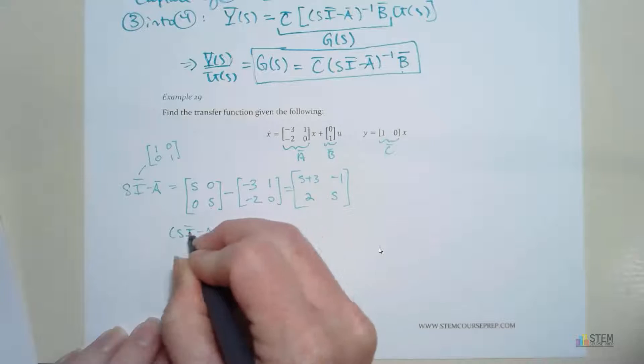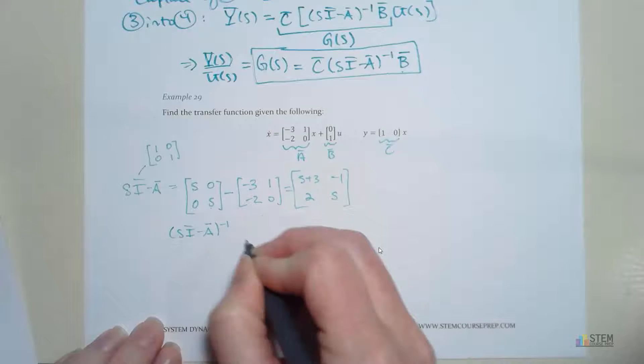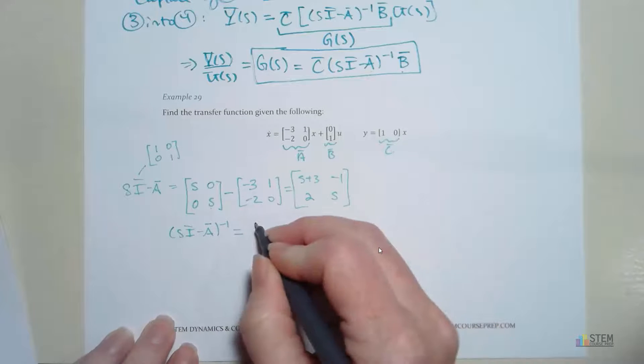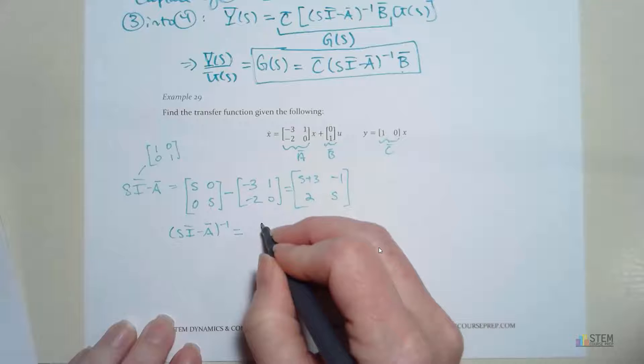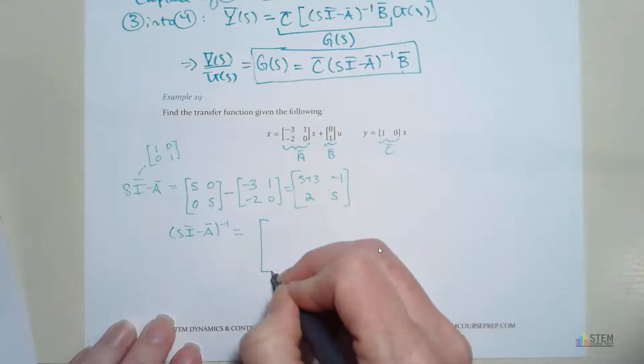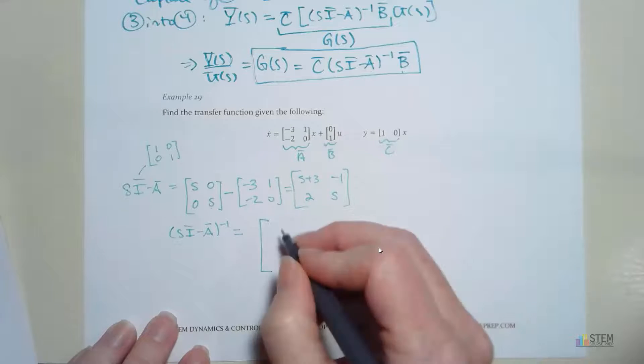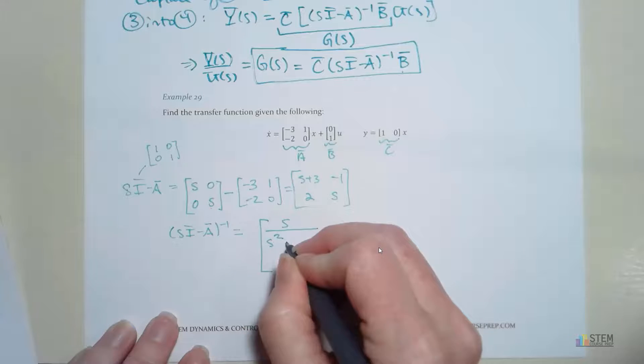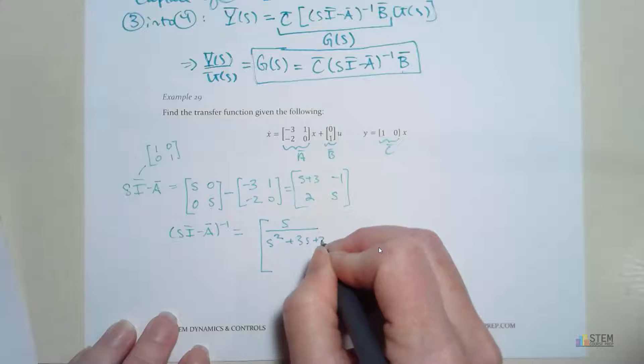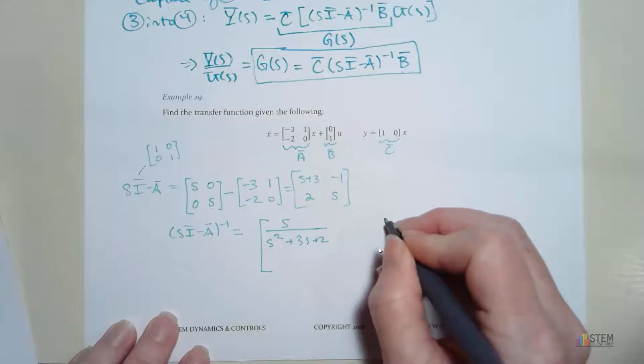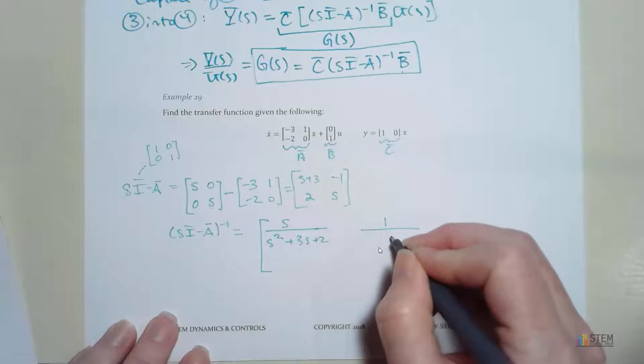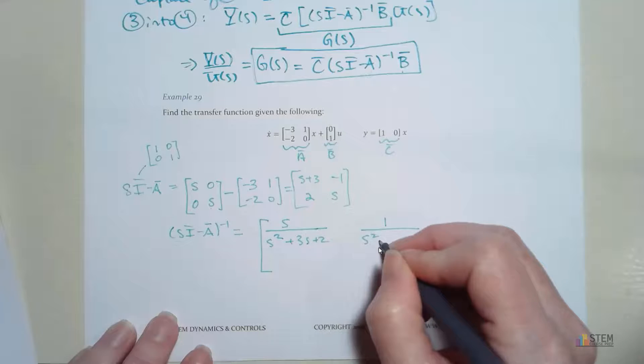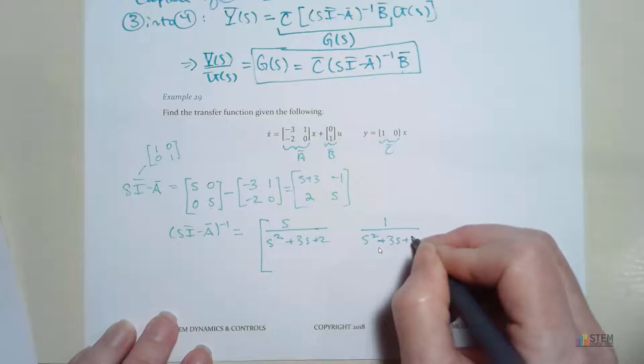If you do the inverse of this, we're going to have (sI minus A) inverse. That is going to equal another 2 by 2. This first term is going to be s over (s squared plus 3s plus 2). And then the second term in the first row, we're going to have 1 over (s squared plus 3s plus 2).